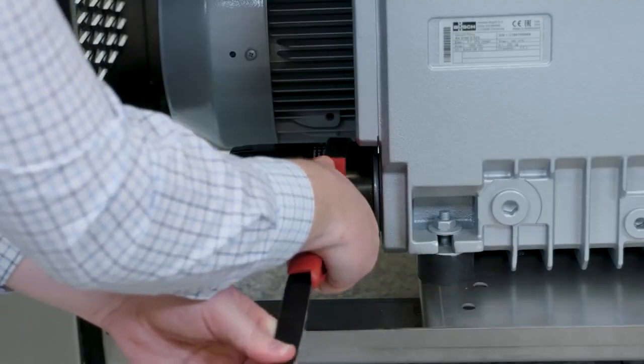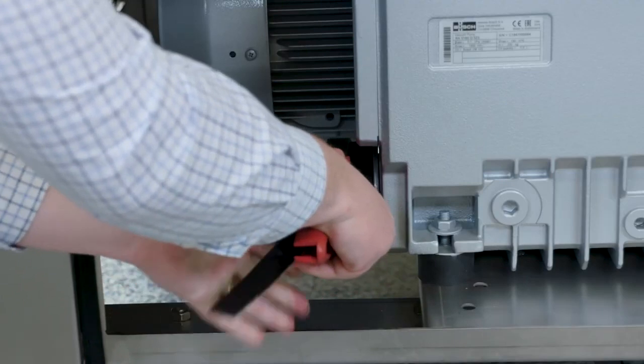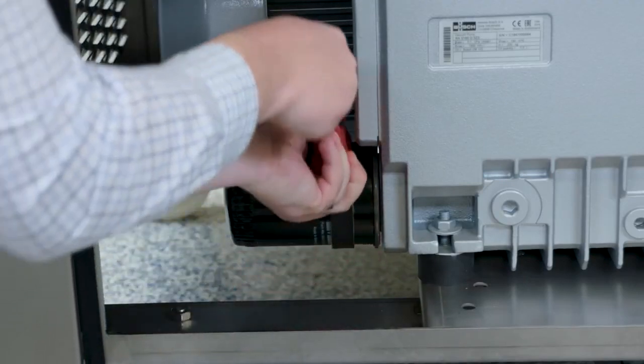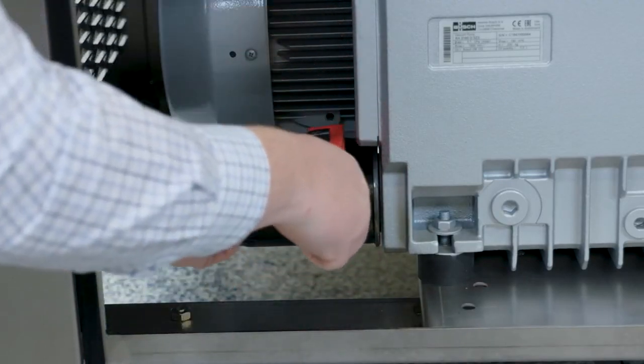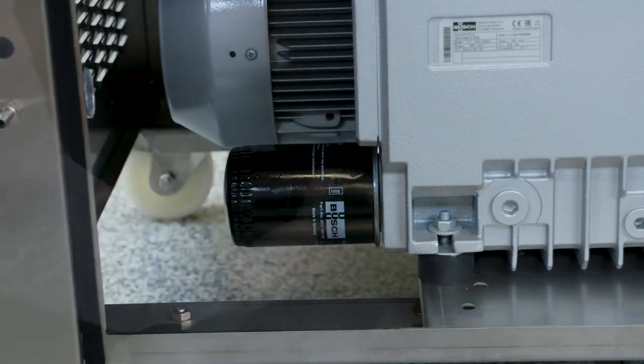Place a container under the oil filter to collect any additional oil left in the oil filter and housing. Using a strap wrench, loosen the oil filter and remove it from the pump.